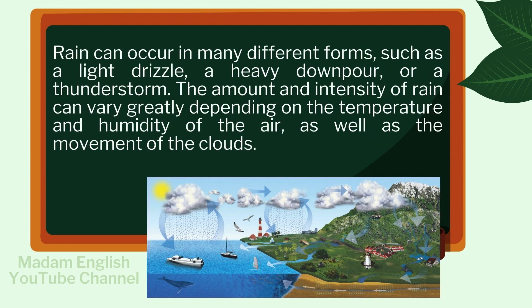Rain can occur in many different forms, such as a light drizzle, a heavy downpour, or a thunderstorm. The amount and intensity of rain can vary greatly depending on the temperature and humidity of the air, as well as the movement of the clouds.